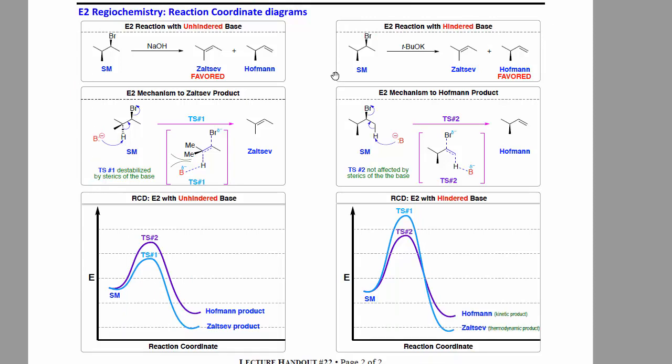Whereas the larger the base, the more likely you go to the Hoffman, the less favored double bond product. Why? Because it's kinetically easier. It's easier to get there.